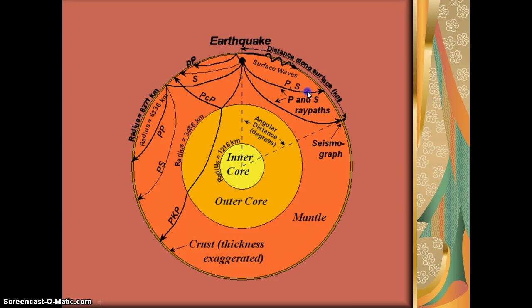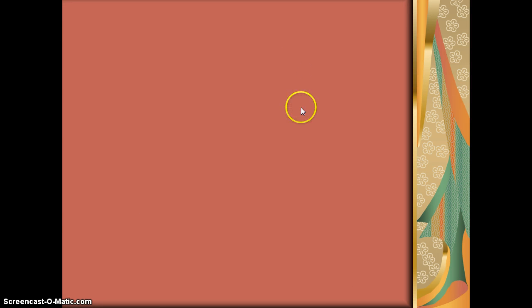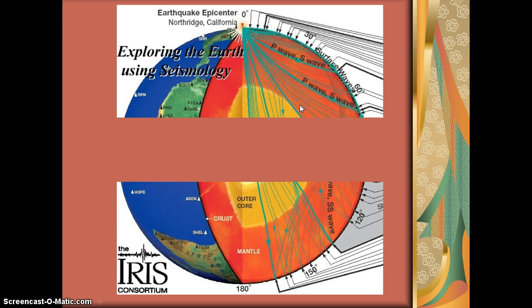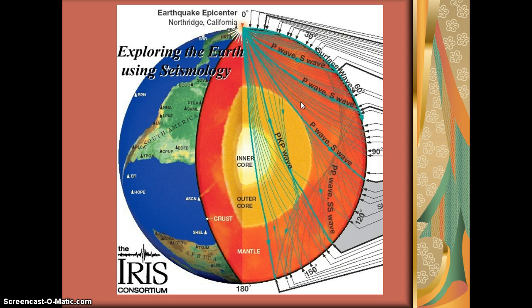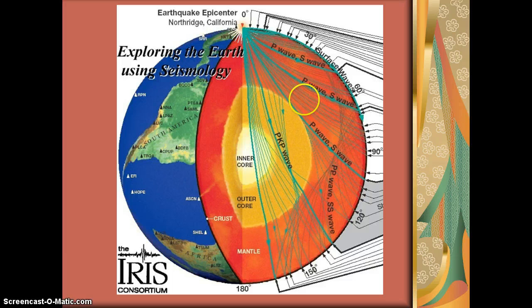We can see that we have surface waves, P waves, and S waves. In this other cross-section of the Earth, we can see that there are a lot of seismic waves released from the point of an earthquake. Depending on what type of wave it is determines what's going to happen to it as it passes through the layers. Some of these seismic waves have three letters in them, and that's only to indicate that that particular wave is passing through multiple layers.